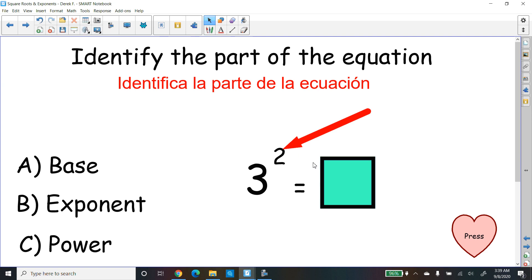Okay. So let's identify the parts of the equation. So I have 3 to the second power equals a box. So the arrow is pointing at the 2. All right Derek, which one do you think the little 2 is called? Is it a base, b exponent, or c power? Ah, you remember the little number on top is called the exponent? So b is correct. So that's the exponent.